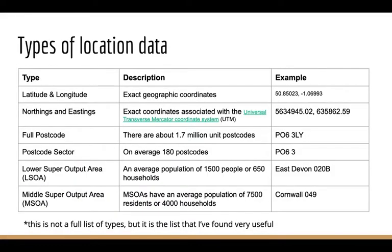There are various types of location data you may work with. The first is exact data — exact geographic coordinates — which comes in two flavours: latitude and longitude, and northings and eastings, which is just a different coordinate system. A slightly more crude measure is a full postcode, used for non-sensitive data. In the UK, there are 1.7 million unit postcodes — for example, PO63LY.